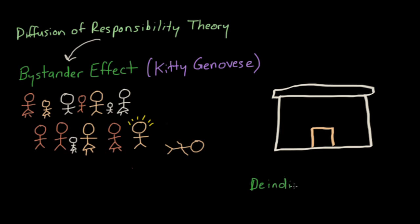De-individuation is a phenomenon in which individuals in a group are more likely to act impulsively, commit crimes, or perform antisocial acts, because the presence of the crowd conceals the person's identity.